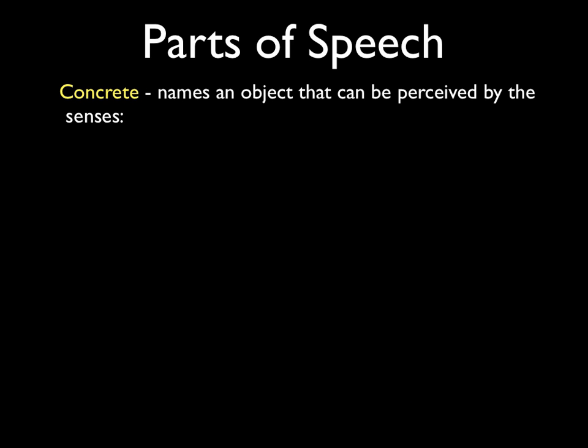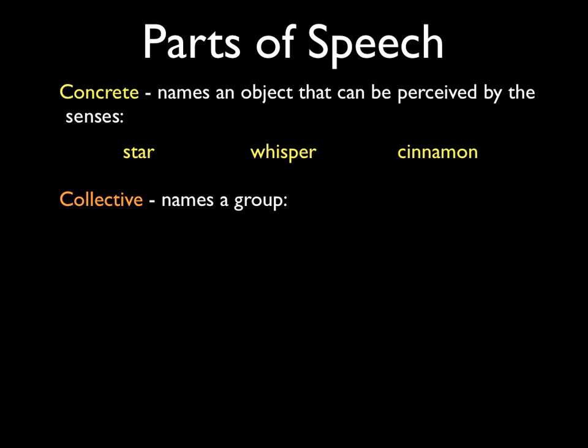Then there are concrete nouns. Those are nouns that name an object and they can be perceived by the senses. You can see a star, you can hear a whisper, you can taste cinnamon. All four of my children love cinnamon — I don't know where they got that, but they do. That's a concrete thing that you can taste and they enjoy it.